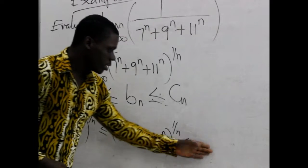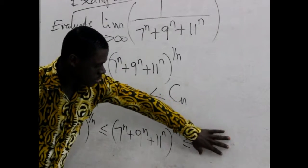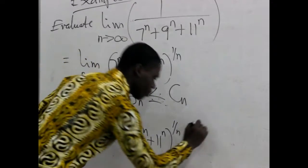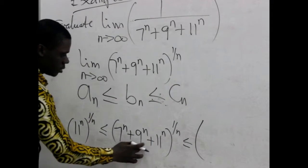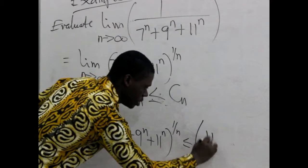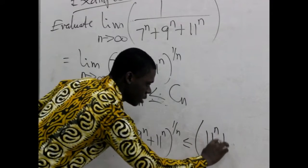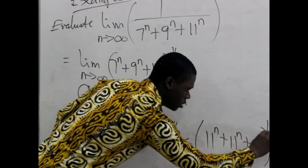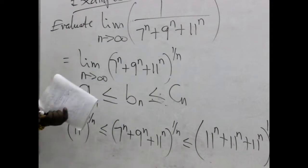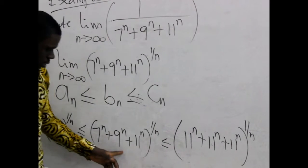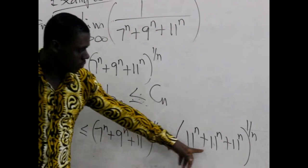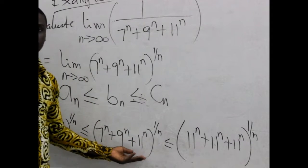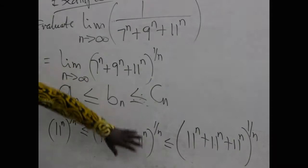Now we create an upper sequence that is greater than or equal to the middle. We have 7, 9, and 11, and we choose to replace all of them with 11^n. So we use 11^n plus 11^n plus 11^n — three terms of 11^n — which is clearly greater than or equal to 7^n + 9^n + 11^n. This condition for the squeeze theorem has now been achieved.